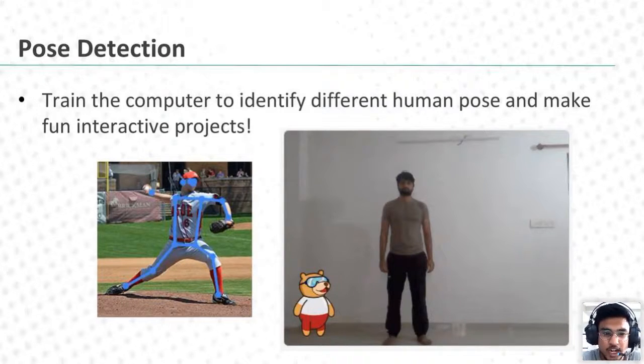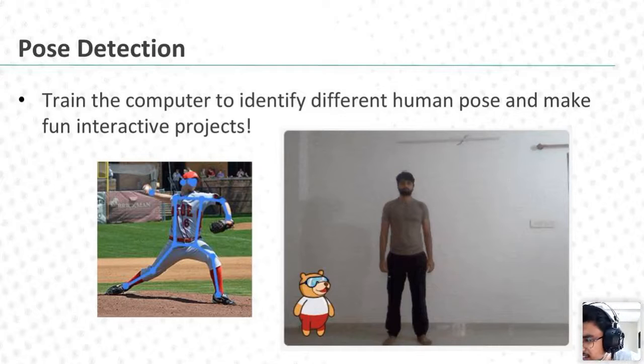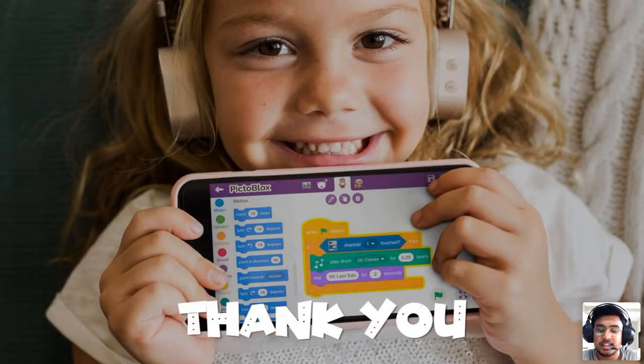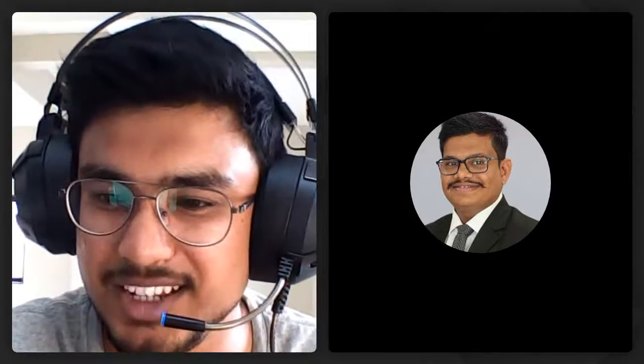Like the jumping jacks project that Ayush sir explained yesterday — how the person is jumping and it is counting how many jumping jacks have been done. In the same way, you can find out yoga poses — you are doing yoga and counting how many times you have performed those poses. There are 68 predefined landmarks in face recognition. I hope you have understood pose detection.